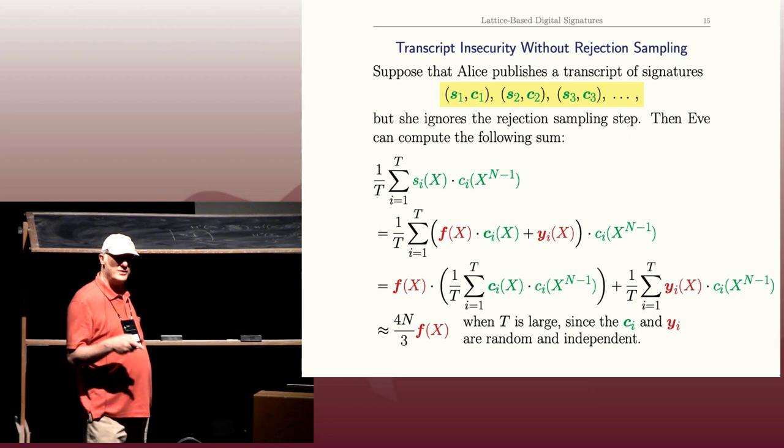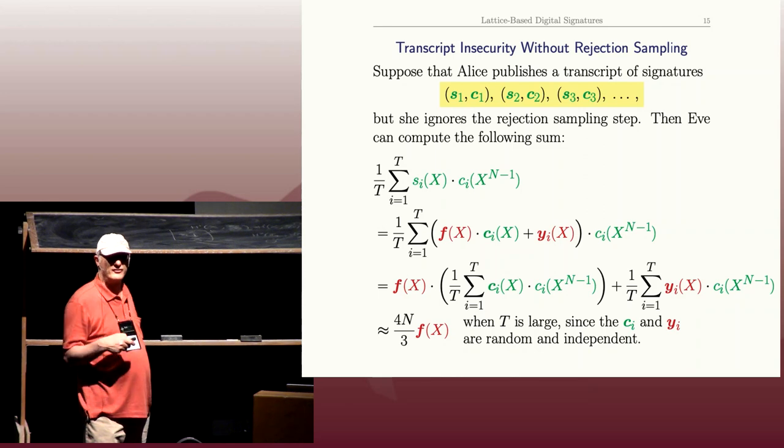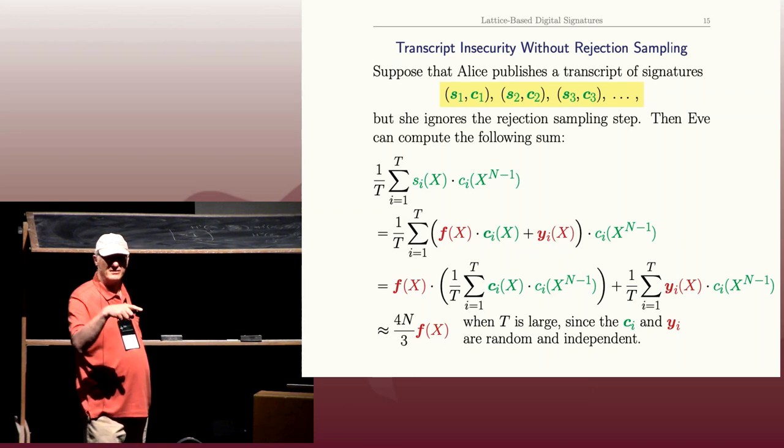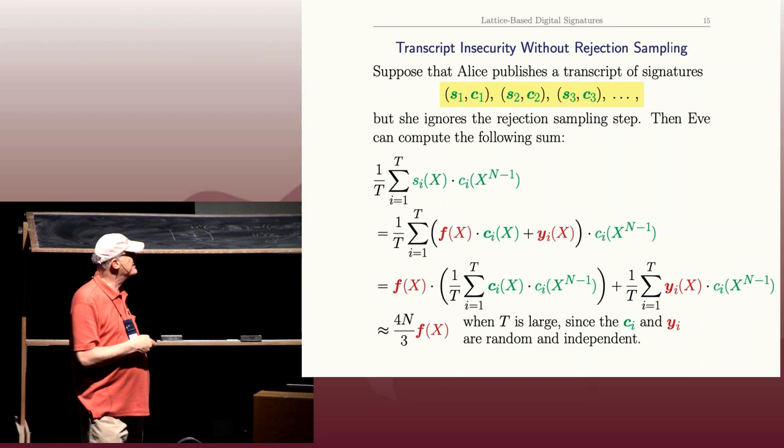And I'll give you an intuition on it. Remember our ring is essentially a cyclotomic ring, or a ring of cyclotomic integers, right? So if you think of X as being an n-th root of unity, then X to the n minus 1 is—really, X inverse is its complex conjugate. If Zeta is a root of unity, 1 over Zeta is the complex conjugate of Zeta, right?